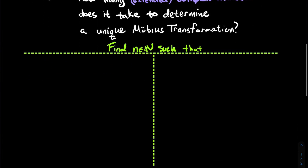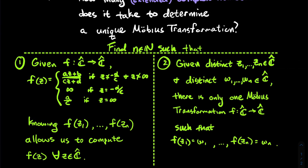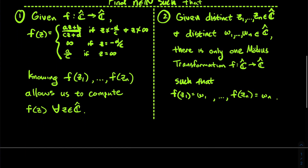A more precise way to ask this: can we find a natural number n such that if you had a Möbius transformation from the extended complex plane to itself, knowing its value at a handful of points z1 through zn allows us to figure out what it does to every point? And secondly, given distinct extended complex numbers z1 through zn and another list w1 through wn, is there only one Möbius transformation such that f takes z_k to w_k for each k?